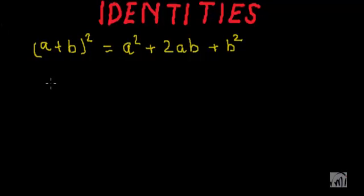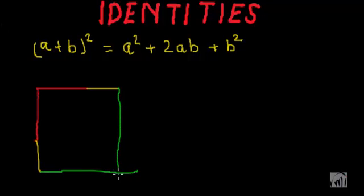Let me first draw a line of length a and then extend this line by a length b. Let me draw one perpendicular line of length a and extend it further by length b. Now, let me draw a square out of these lengths. This is a square of size a plus b.